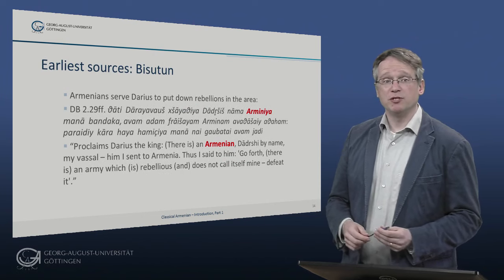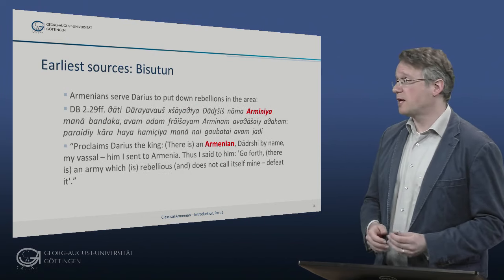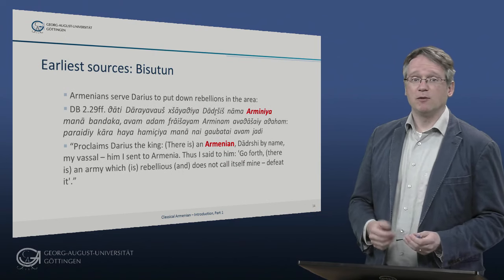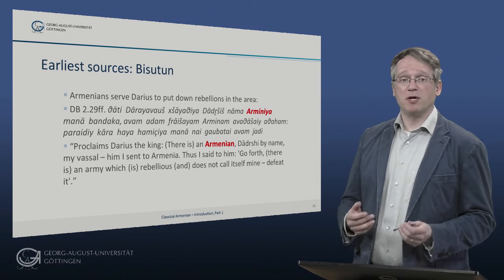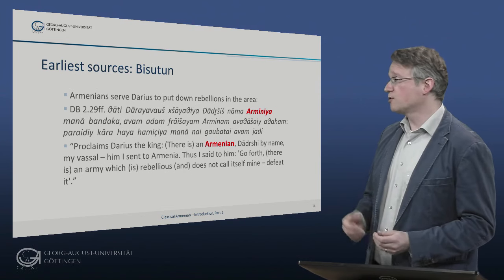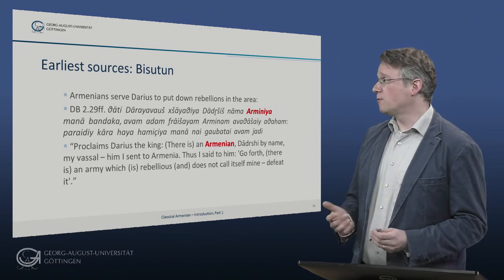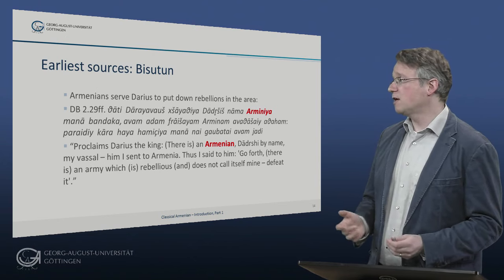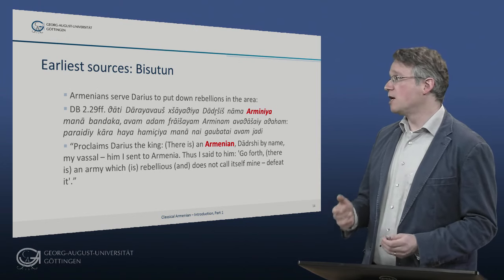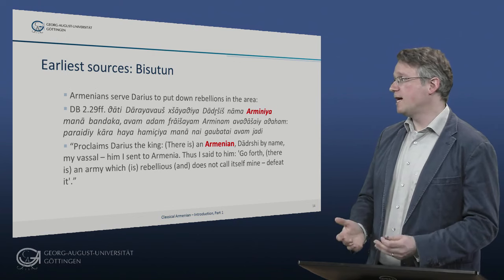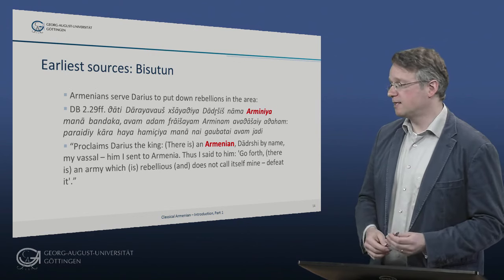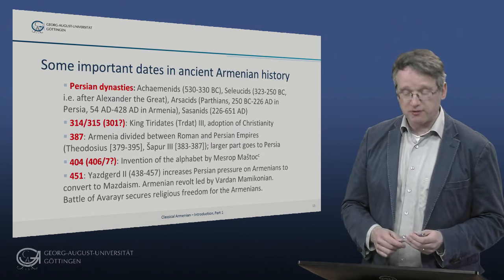The Armenians mentioned in the Bisutun inscription bear Iranian names — for example, a person called Dadrshish, 'the brave one' — which betrays the deep impact of Iranian, especially Parthian and Middle Persian, on Armenian language and culture. Darius proclaims: 'Dadrshish nama Armina mana bandaka' — 'Dadrshish by name, my vassal in Armenia' — 'him I send to Armenia.' He then orders him to go forth and defeat the rebellious army, though this was not very successful.